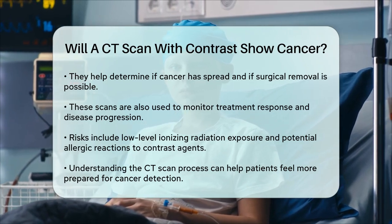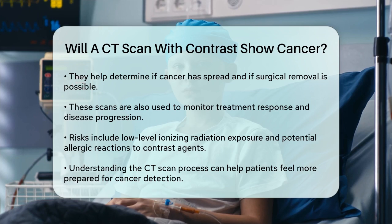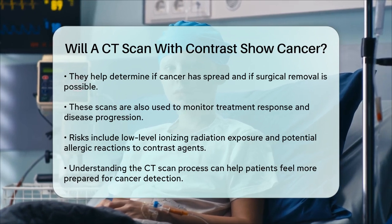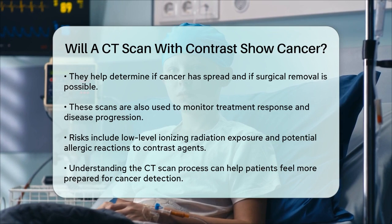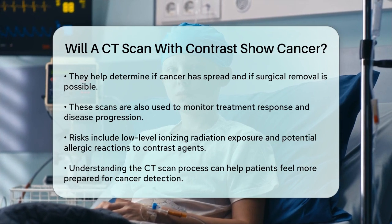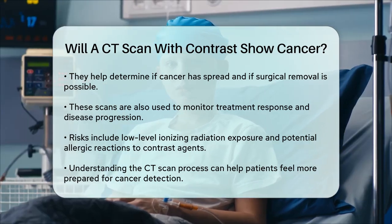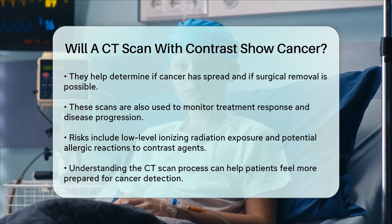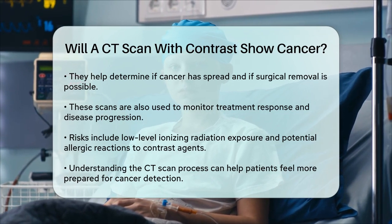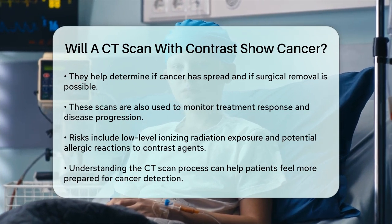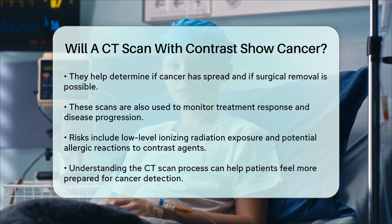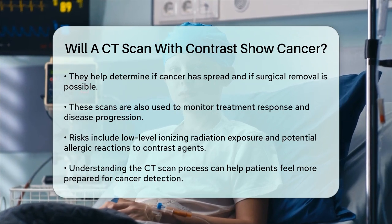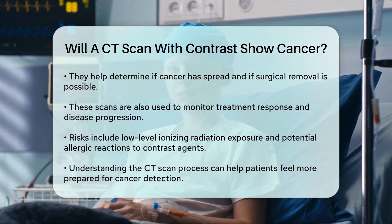In summary, a CT scan with contrast is a powerful diagnostic tool that can help identify cancer by highlighting abnormal tissues and structures. It is particularly useful in the early detection and staging of cancer, and while it carries some risks, the benefits often outweigh these concerns. If you're undergoing a CT scan for cancer detection, understanding how it works can help you feel more prepared and informed.